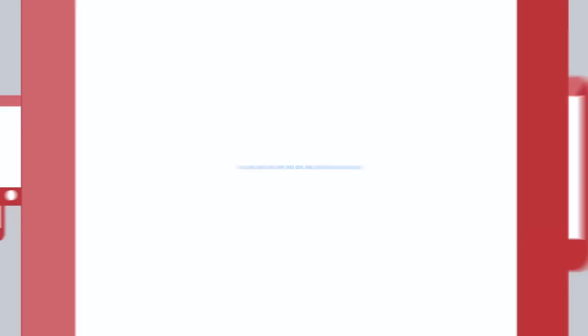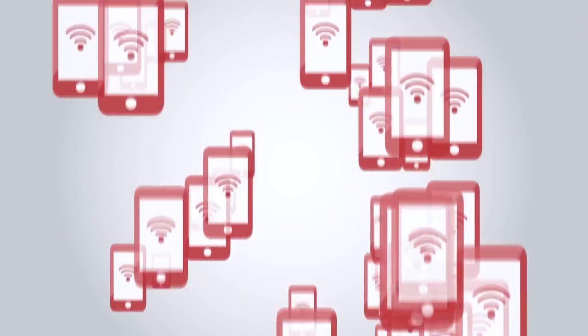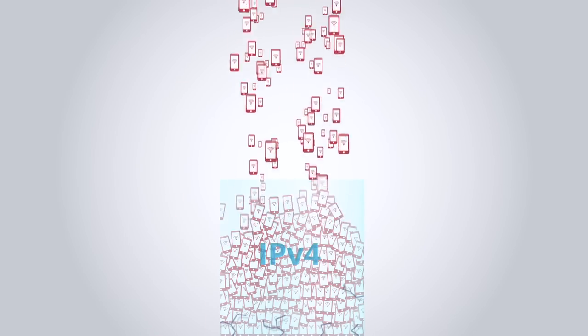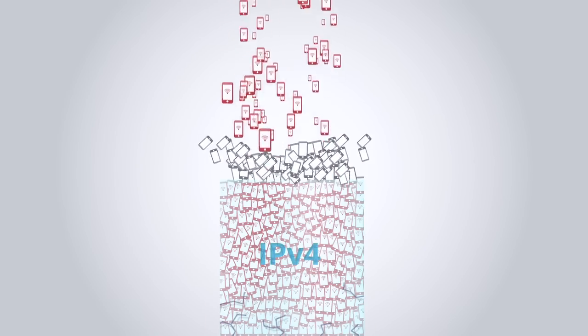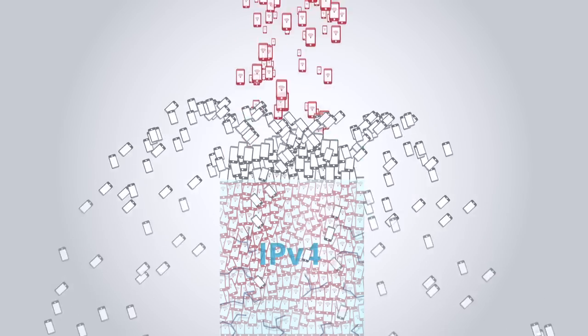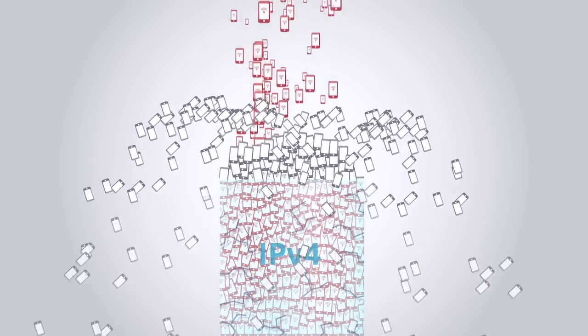There are already 5.5 billion mobiles in the world. If they all had internet addresses, it would instantly exhaust the IP version 4 address space, which is only 4.3 billion addresses. So 16 years later, not only have we run out of IP version 4 address space, but we're now absolutely compelled to implement the new one so we can continue to grow the network.